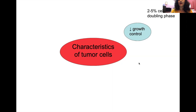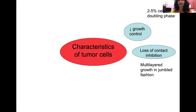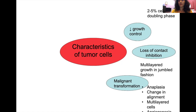Contact inhibition is the property by which proliferating cells stop growth once they come in contact with each other. In tumor cells there is a loss of contact inhibition, leading to multi-layered growth in a jumbled fashion. Malignant transformation leads to less differentiation and anaplasia, seen as large cells, large nuclei, hyperchromatic nuclei, and distorted cell margins. Cells also grow in a multi-layer alignment, and a peculiar characteristic is the presence of angiogenesis — synthesis of blood vessels to nourish and support rapid cell growth.